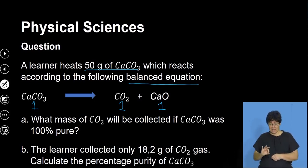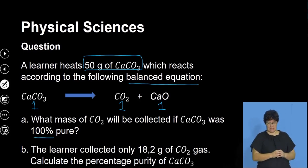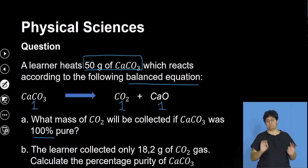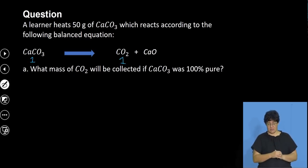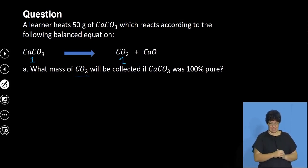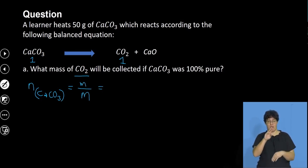The first question asks what mass of carbon dioxide will be collected if the calcium carbonate was 100% pure. If it's 100% pure, there are no impurities — all 50 grams is pure calcium carbonate. To answer this, we use the stoichiometric ratio. First, we calculate how many moles of calcium carbonate are present in 50 grams: moles equals mass divided by molar mass.